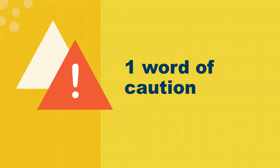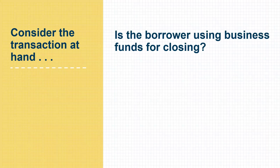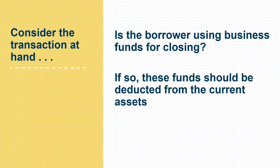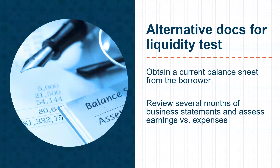One word of caution: we always need to consider the transaction at hand. Is your self-employed borrower using business funds for closing? If yes, those funds should be deducted from the current assets prior to calculating a liquidity ratio. What if Schedule L is blank? If the business does not have gross earnings of at least $250,000, it is not required to complete a Schedule L. In that case, alternative methods can be used: a current business balance sheet can be requested from the borrower, or you can review several months of business bank statements and assess earnings versus expenses.